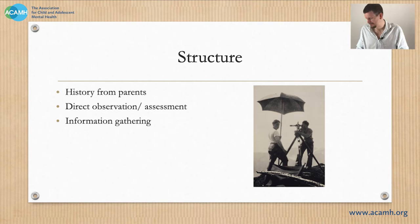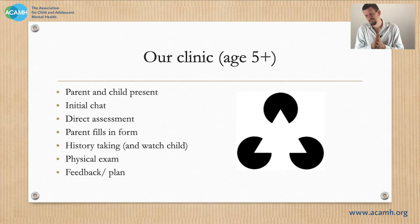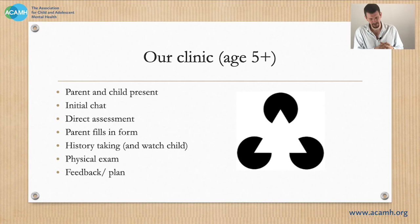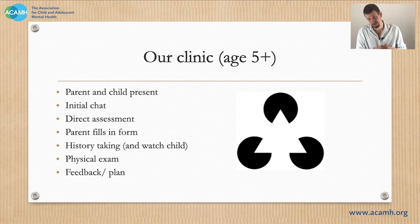Our clinic is for age five plus — there's not much difference if you're doing an under-five in how you assess, though you may use different instruments or set different tasks. We will have a parent and child present, although there will be opportunities to talk individually if necessary. I will have an initial chat — that's very important to put the child at the heart of the assessment and make them feel important, because it can be quite daunting. I tend to do the direct assessment at the beginning so I have an idea of what the child's capabilities are, and when I take the history I can adjust my expectations — for instance, if he's not doing what we'd expect for a nine-year-old but I've just assessed him as having cognitive skills for a six-year-old.